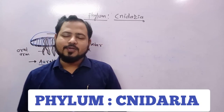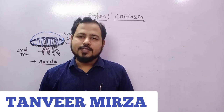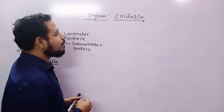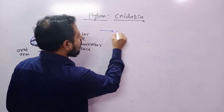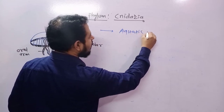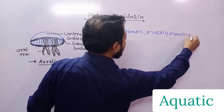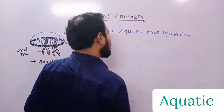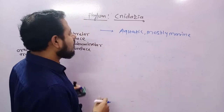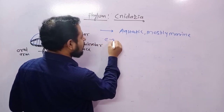Welcome dear students. This lecture is based on Phylum Cnidaria, also called Coelenterates. All the members of this phylum are aquatic — mostly marine, found in sea water — but some are found in fresh water as well.